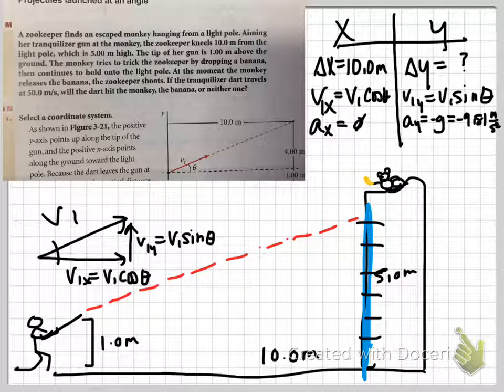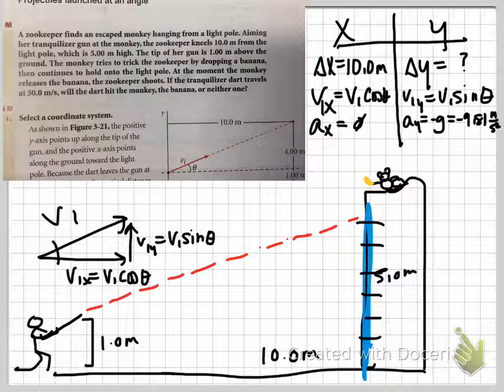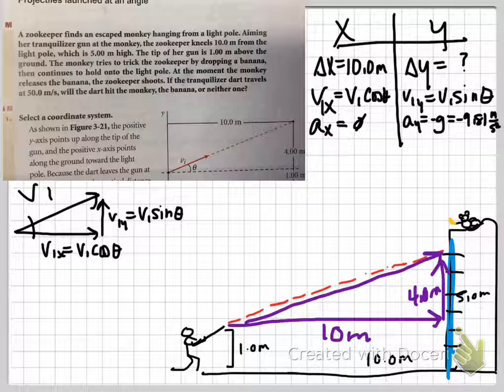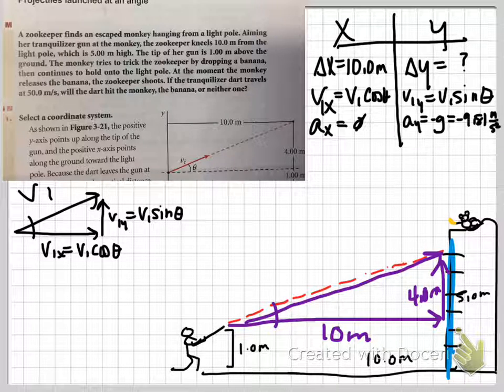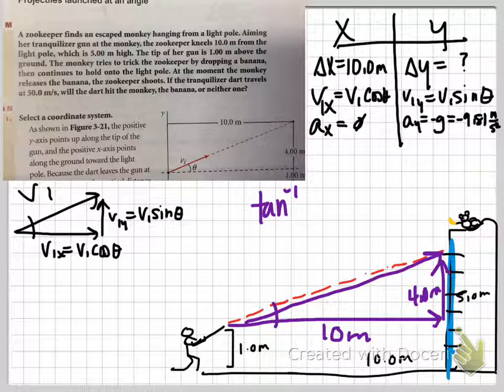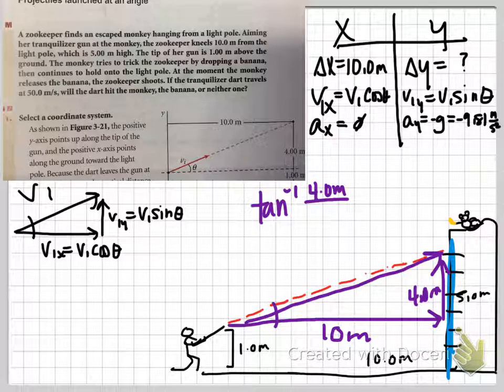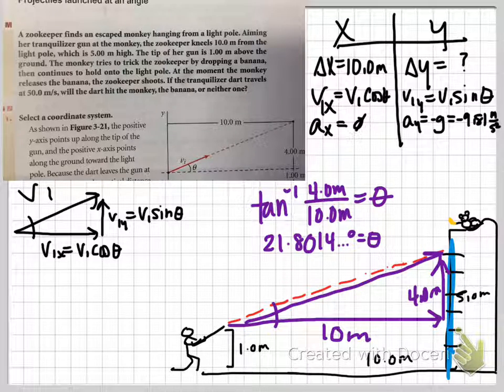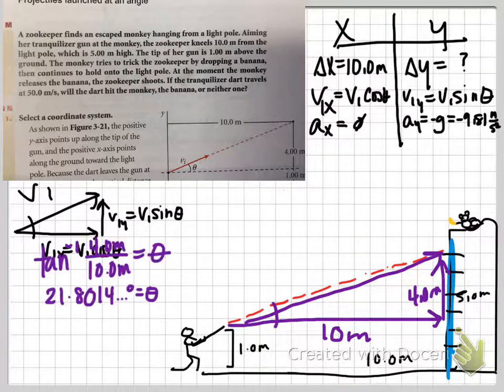I suppose it would be helpful if I knew what theta was. Do I have a way to find theta? What we know is that where she's aiming the gun is presumably at the light post. The tip of the gun is one meter above the ground and the light post is five meters above the ground. So this side of that triangle would be four meters. What we have is a triangle that's got a ten meter X and a four meter Y. Can we find theta given that information? Of course we can. Inverse tangent of opposite 4.0 meters over adjacent 10.0 meters gives us theta. I find my theta is 21.8 in pocket change.